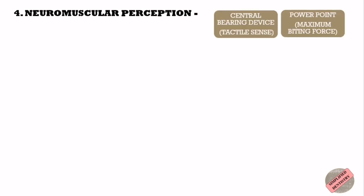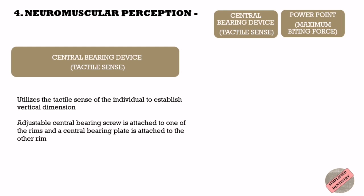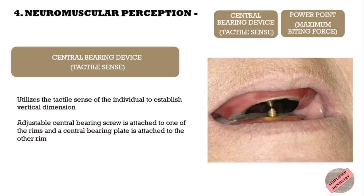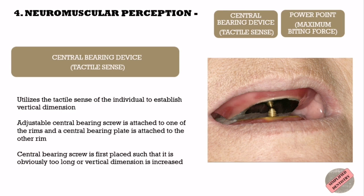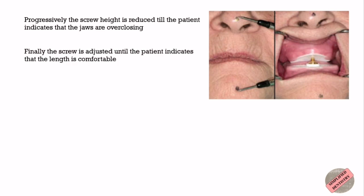The fourth physiologic method is neuromuscular perception, which can be done in two ways: using a central bearing device or through maximum biting force. The central bearing device utilizes the tactile sense of the individual. An adjustable central bearing screw is attached to one rim and a central bearing plate to the other. The screw is first set obviously too long; vertical dimension is increased progressively, then the screw height is reduced until the patient indicates the jaws are over-closing. Finally, the screw is adjusted until the patient indicates the length is comfortable. The problem with this method is the presence of foreign objects in the palate and restriction of tongue space.